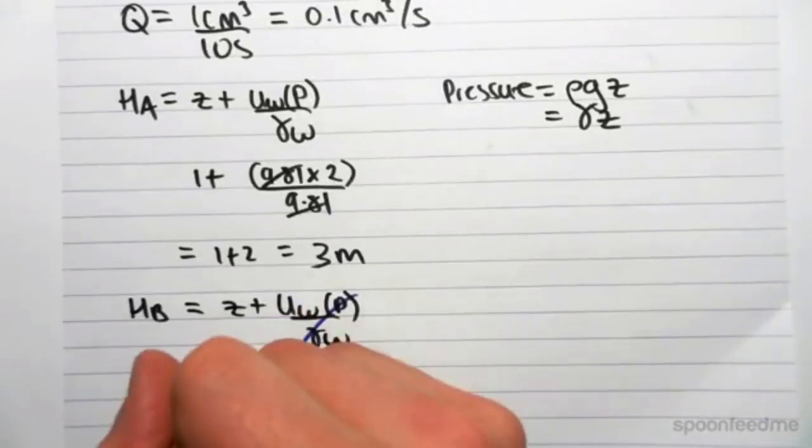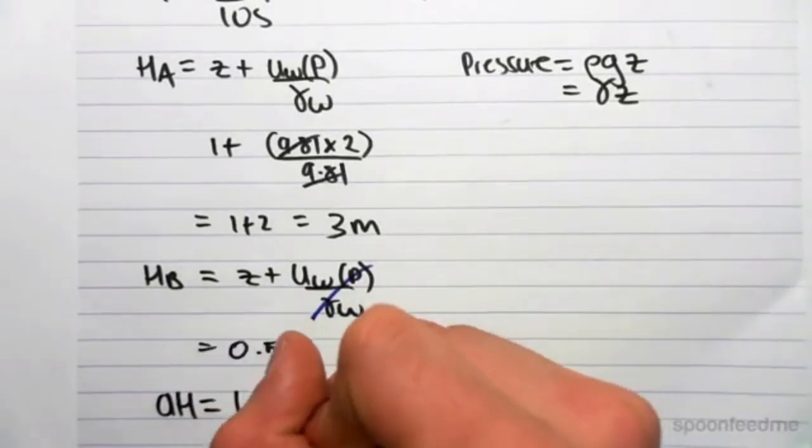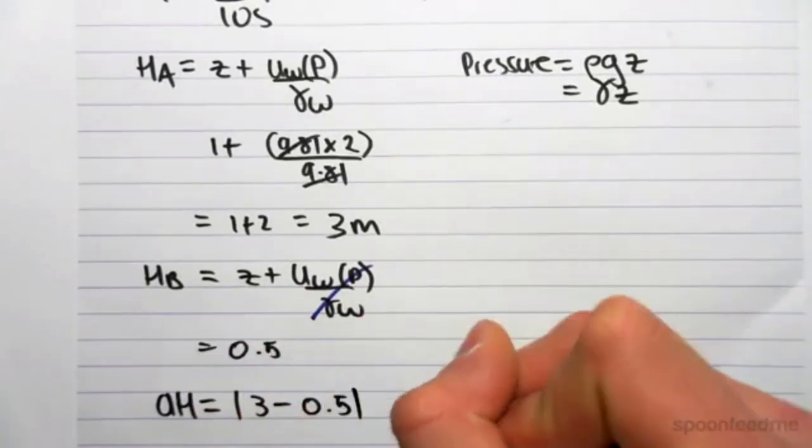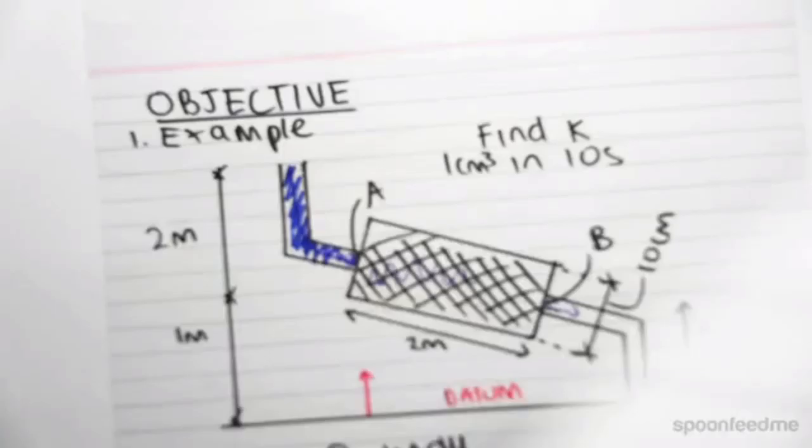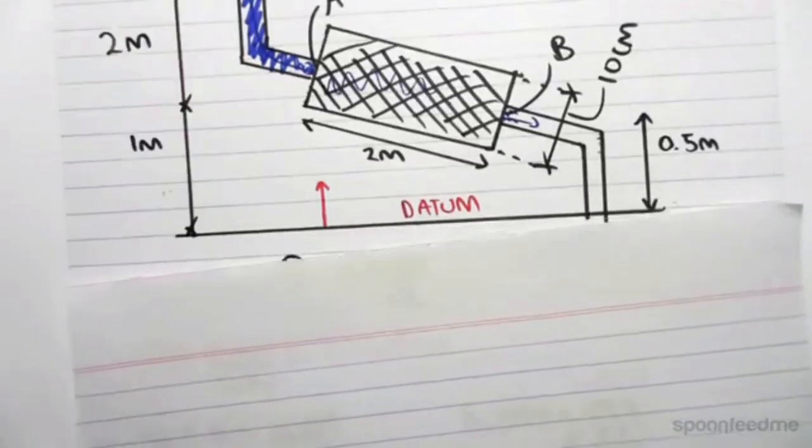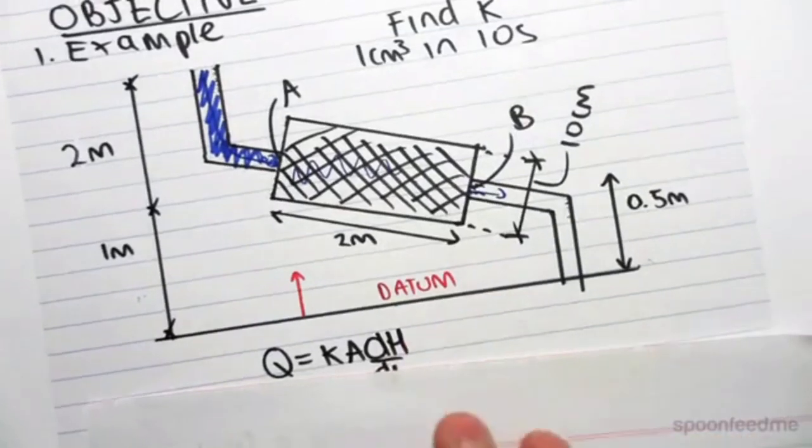Which means we can find dH, the change in head. We just use absolute values. You just want to know the absolute value. So it's 3 minus 0.5, which is 2.5 m. Now we can find dL, which is the change in length from A to B, which is simply 2 m.